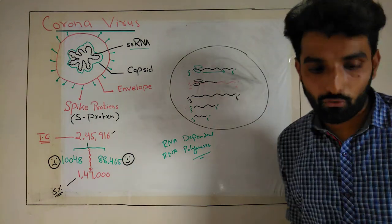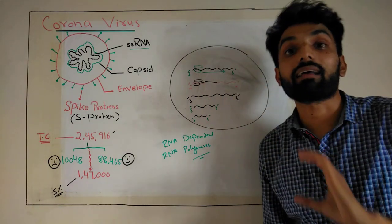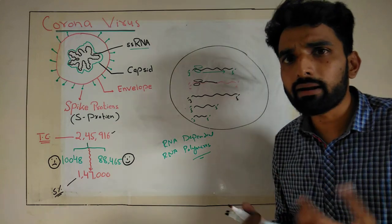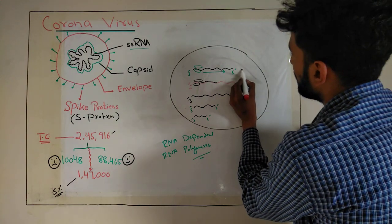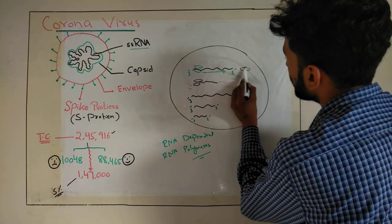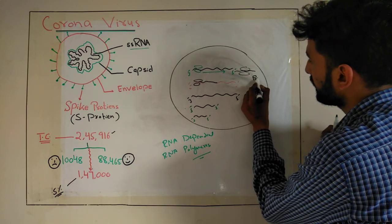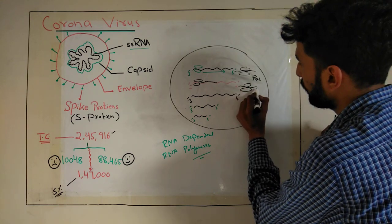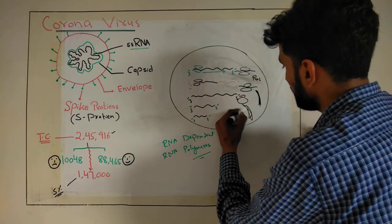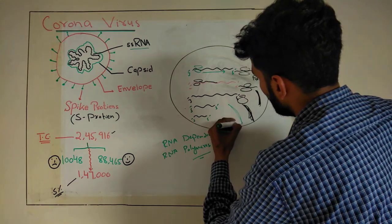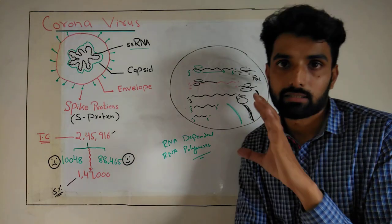All these viral RNAs will again be translated — that is, proteins will be produced from these viral RNAs. Again, on the ribosome, these RNAs will be loaded and proteins will be formed. However, there is a problem: these proteins are very large and they are not active — they are immature, inactive proteins.